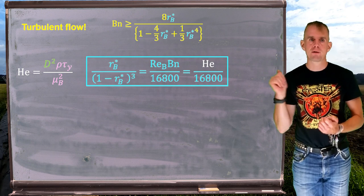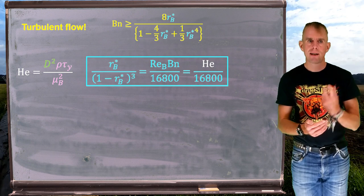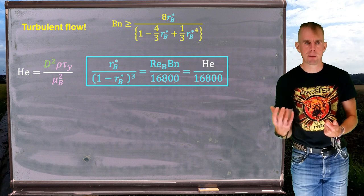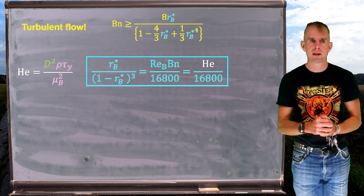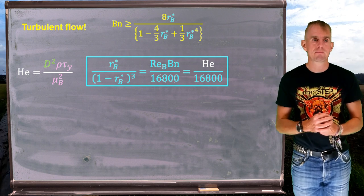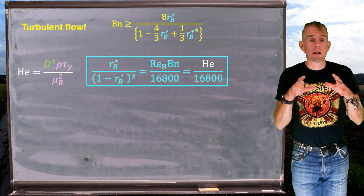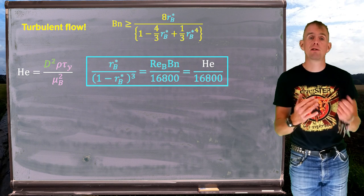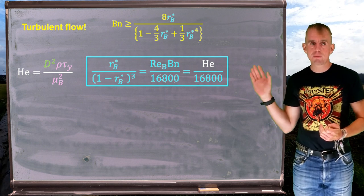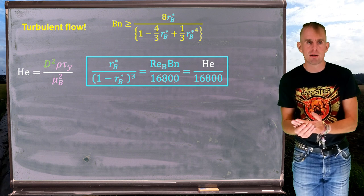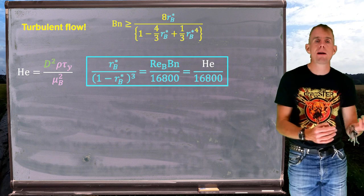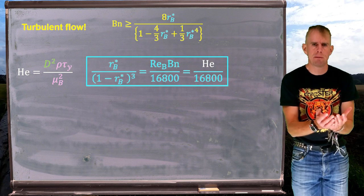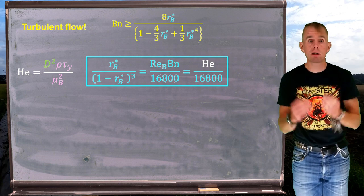There is another way of working out R_B*, which involves yet another non-dimensional number: the Hedstrom number. The Hedstrom number is simply defined as the product of the Bingham Reynolds number multiplied by the Bingham number. When you work out an expression for that, we have R_B over (1 − R_B)³ equal to the Hedstrom number, and the transition is Hedstrom number over 16,800. What we see from this expression is that we only have material terms — τ_y and μ_B — and geometric terms including my pipe diameter.